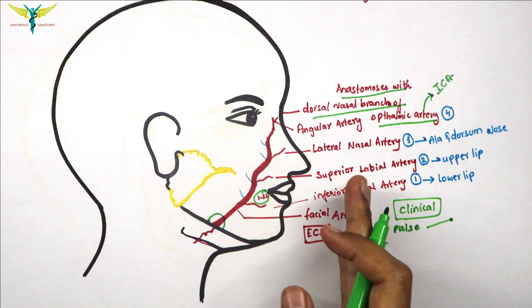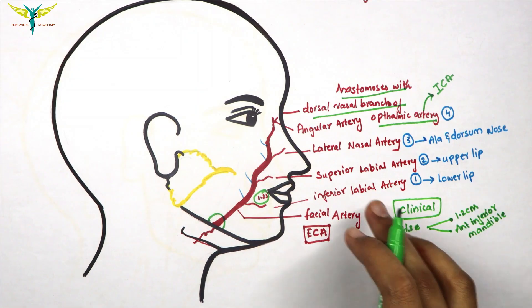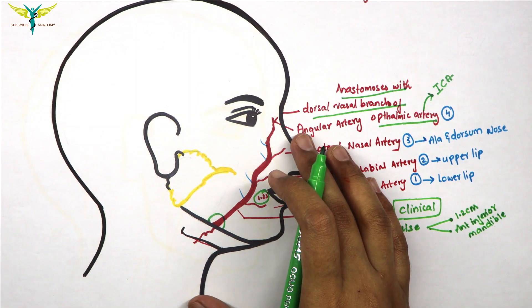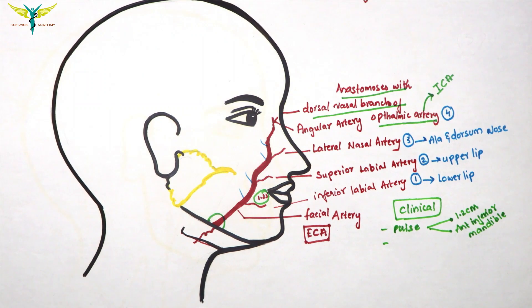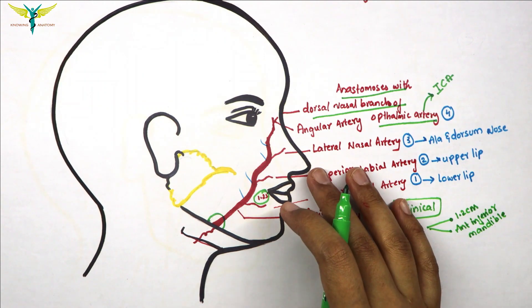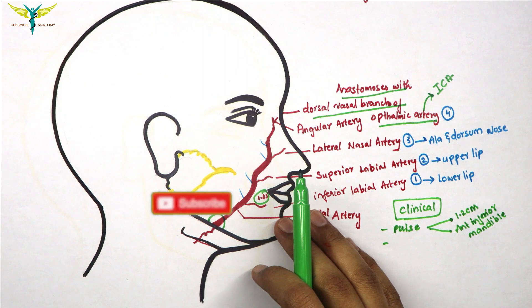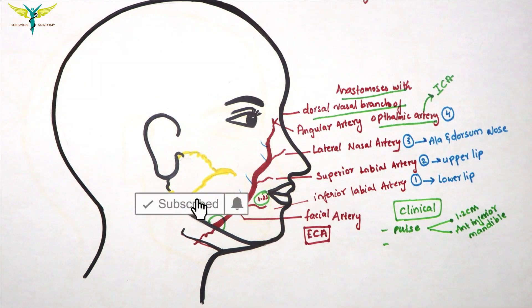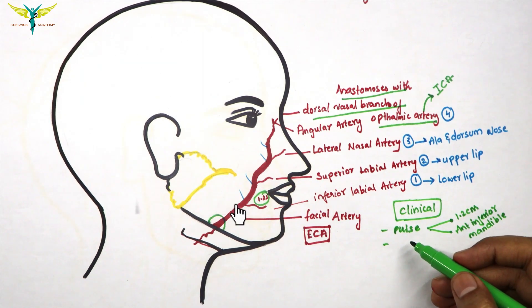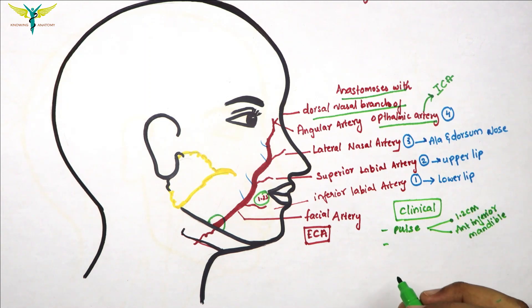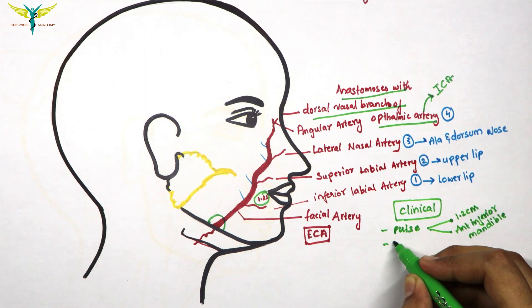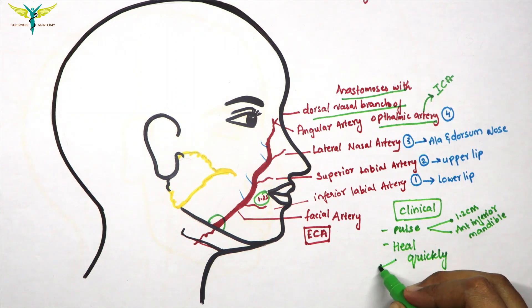Wounds of the face bleed profusely because the face is supplied by the main artery — the facial artery — and is highly vascular. However, the main important point to note is that they heal quickly. So remember: facial wounds bleed profusely but heal quickly.